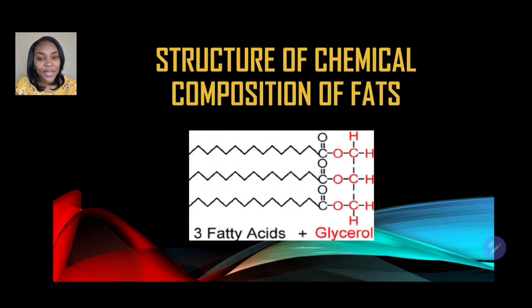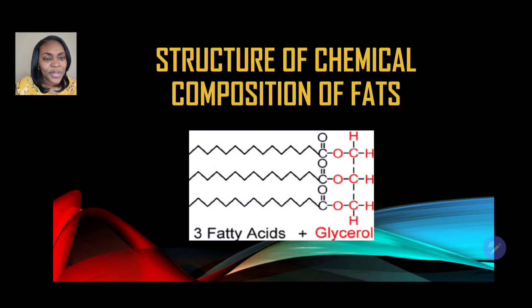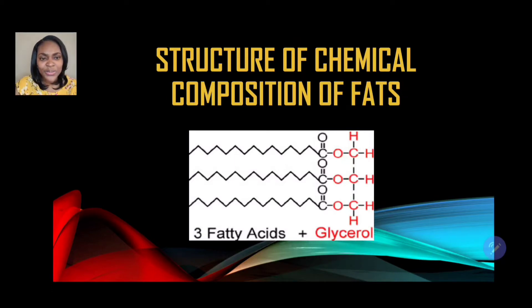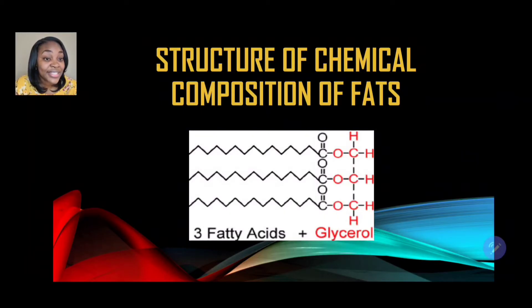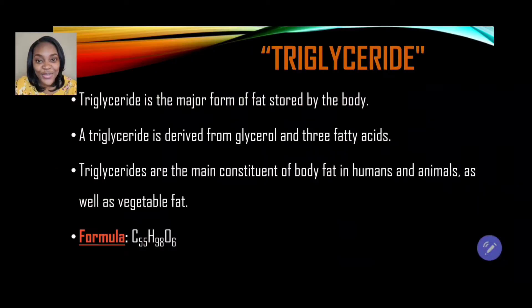First up, we're looking at the structure and chemical composition of fats. Based on this diagram, we're seeing some zigzag or kinked lines, some letters representing certain elements, and three fatty acids plus glycerol. Can you describe the chemical structure of fats and what those letters represent? Hold that thought and let's see if you are correct.